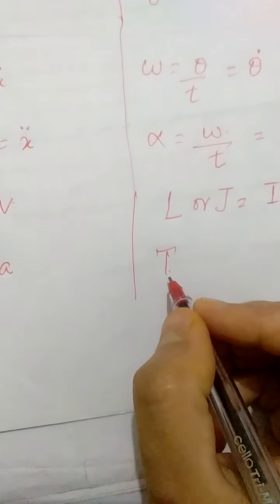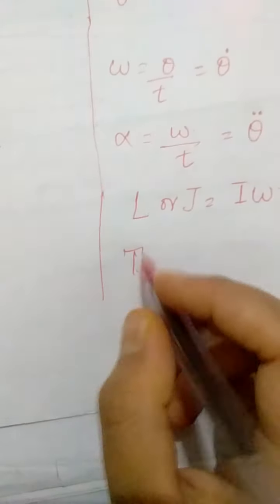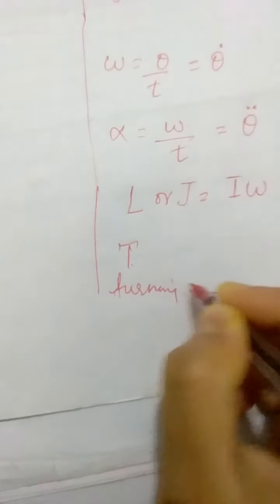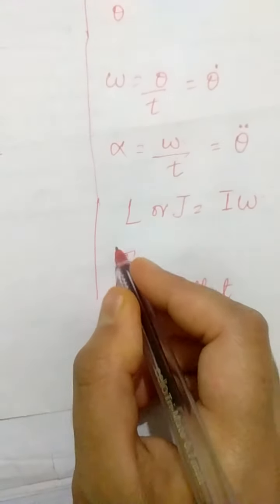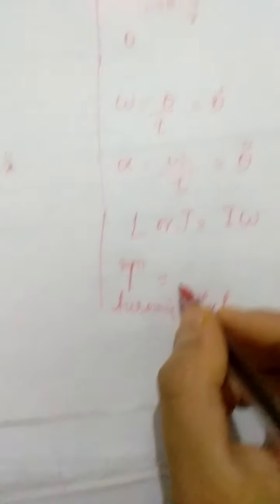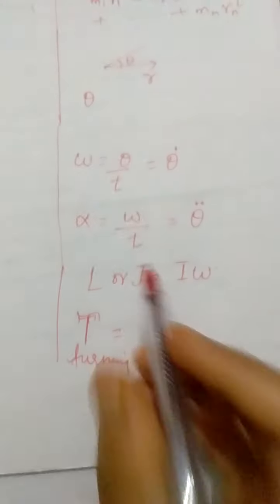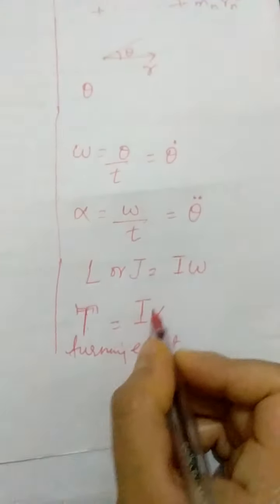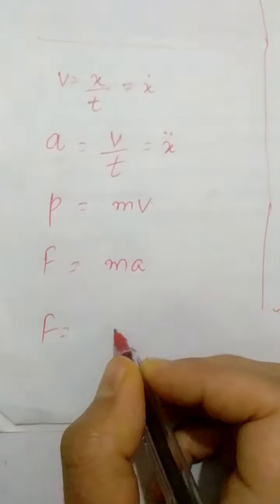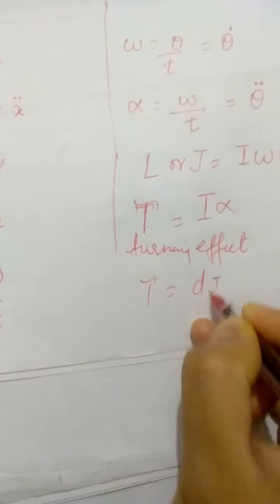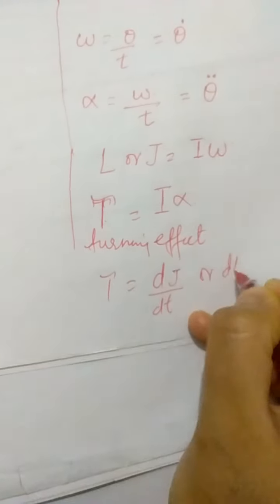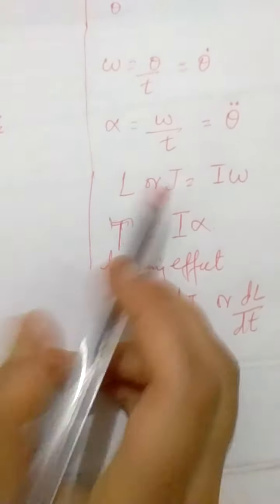In rotary motion, we define torque — torque is the reasonable term to define here. It is the turning effect of a force, a force which produces a turning effect is called torque, denoted by the symbol tau. In analogy, since force equals mass times acceleration, for mass in rotary motion we write I and for acceleration we write angular acceleration alpha. This torque can also be expressed as the rate of change of angular momentum: dJ/dt or dL/dt, since angular momentum is denoted either by L or J.